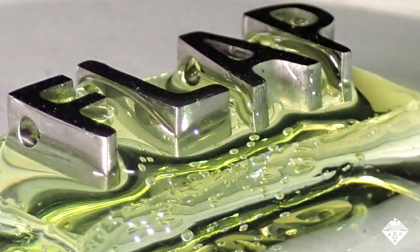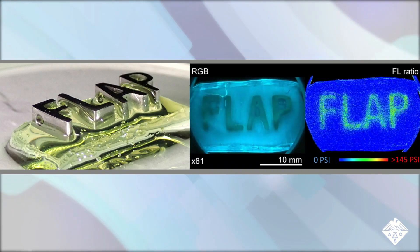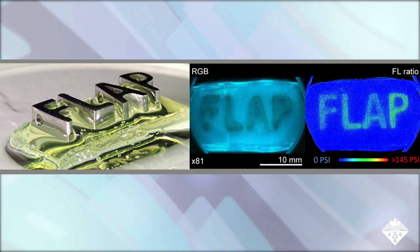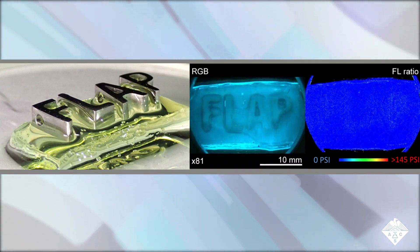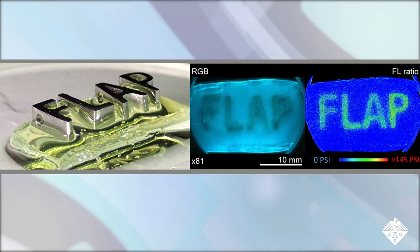In their final test, the team placed metal letters on a rectangular block of gel and then picked them up. They used maps of the green to blue fluorescence ratio to calculate the pressure each letter placed on the gel below, which ranged from 0 to 145 pounds per square inch.